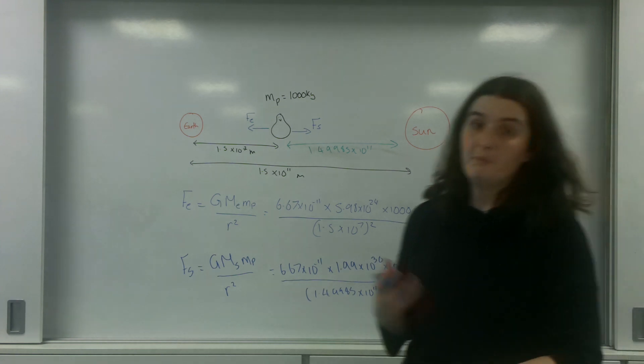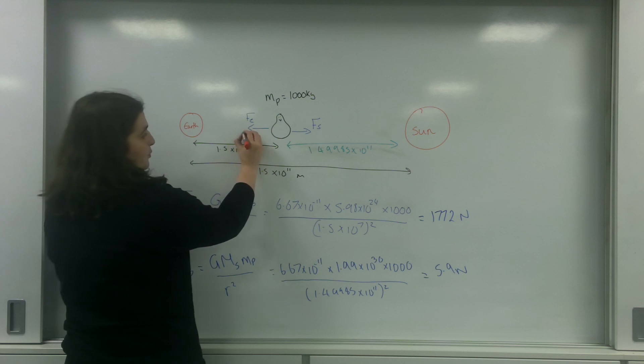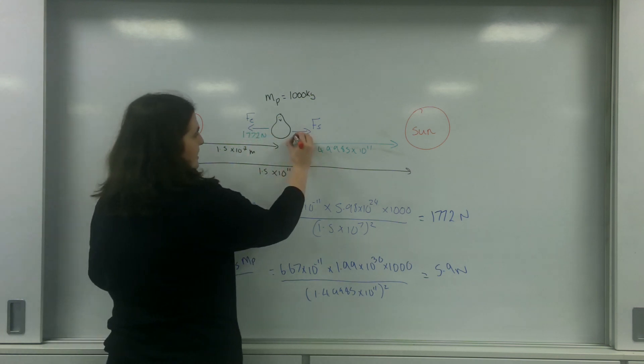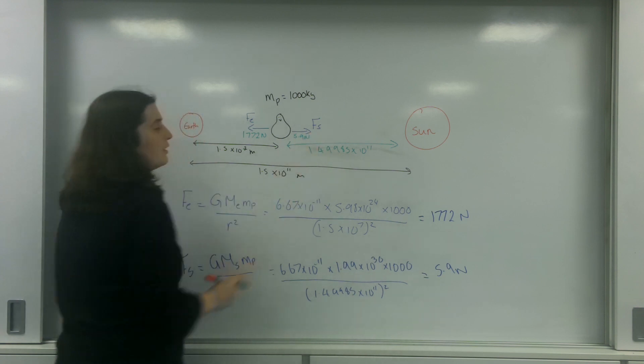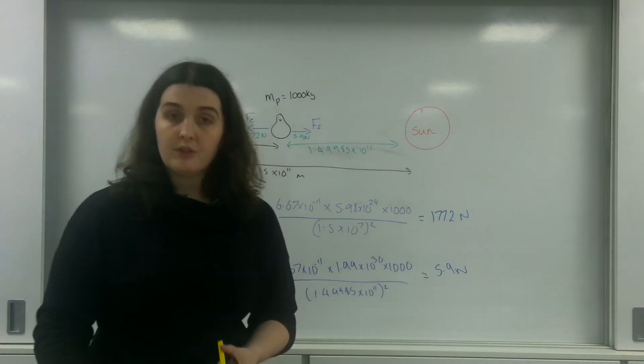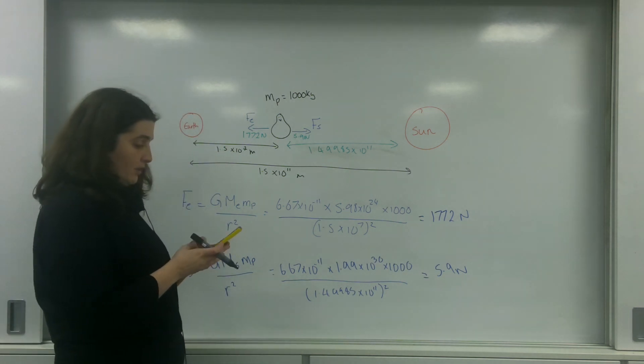So he's not really being pulled by the Sun at all. This here is 1772 newtons and this here is 5.9 newtons. Literally, all you do is exactly the same as you would do in linear forces: you just take them away from each other. So 1772 minus that.